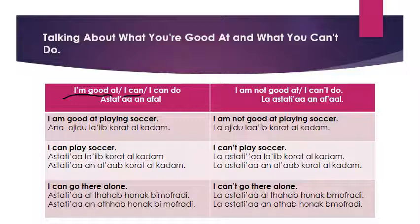Or you can say it another way: 'I can play soccer.' Either you put the noun form of the verb, or use 'I can' plus the conjugated form of the verb. 'I can' is أستطيع, 'go' is أذهب, so 'I can go there alone' is أستطيع أن أذهب. You need to know that 'play' means ألعب, 'go' means أذهب, 'there' is هناك, and 'alone' is بمفردي. So these are the main ways to express what you can do or your hobbies.